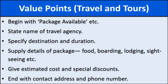This slide is very, very important. You must know the value points which can be used while writing an advertisement for travel and tours. First, state the name of the travel agency. Specify the destination and duration of the tour. Supply details of the package like food, boarding (on board a ship, airplane, train, etc.), lodging (place to live), and sightseeing (visiting places of interest). Give estimated cost and special discounts if any. End with contact address and phone number.